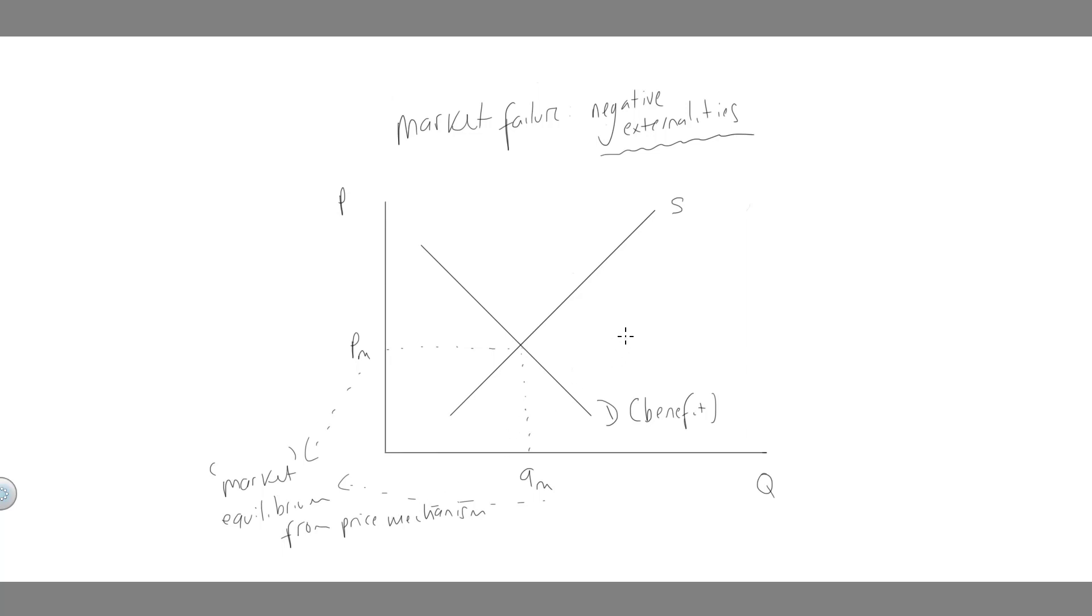So what we're saying though, is that this supply curve represents a particular form of supply: the private cost of firms.